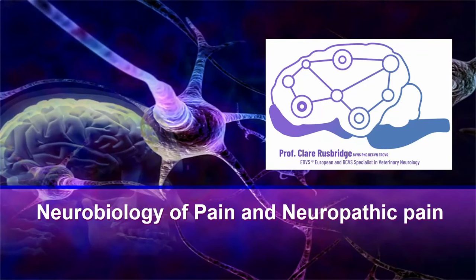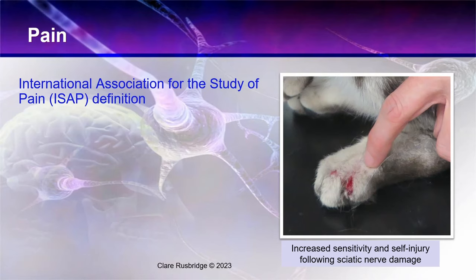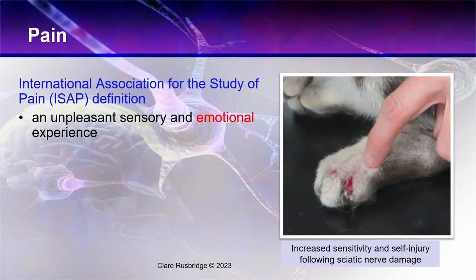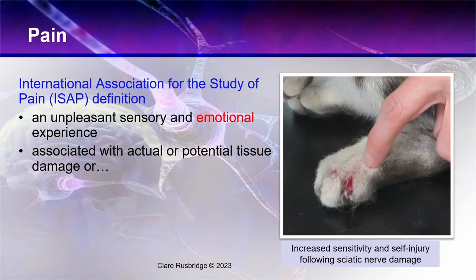So, the neurobiology of pain and neuropathic pain. What actually is pain? The International Association for the Study of Pain defines pain as an unpleasant sensory or emotional experience. It's important when talking about domestic animals to include the emotional side of things, because it's something humans can express but animals may have great difficulty communicating. It's associated with actual or potential damage.